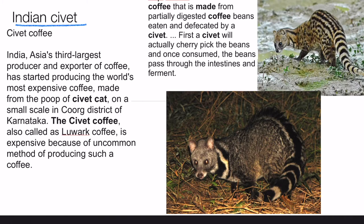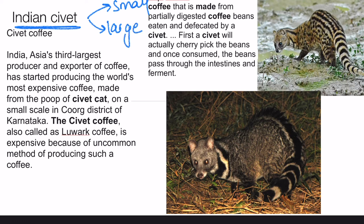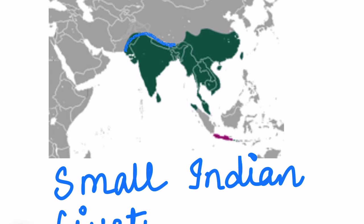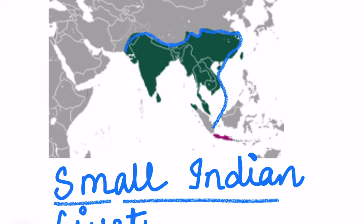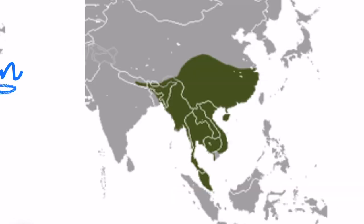Our next animal is very interesting and fun to learn about — it is the Indian civet. There are two types of Indian civet cats: the small civet cat and the large civet cat. The small Indian civet cat is found in most of India and Southeast Asia, while the large Indian civet cat is found in India and parts of Southeast Asia.